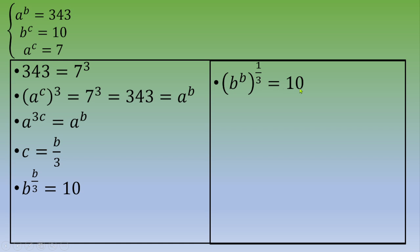Now you raise both sides to the power of 3, and you obtain b^b = 10³ = 1000.